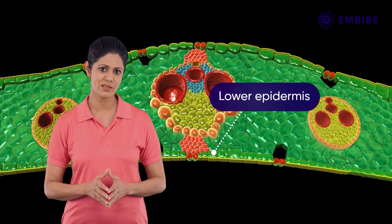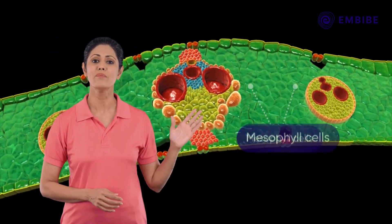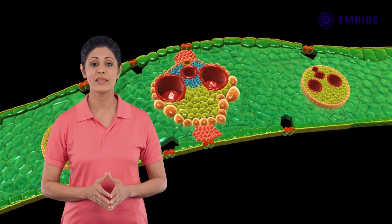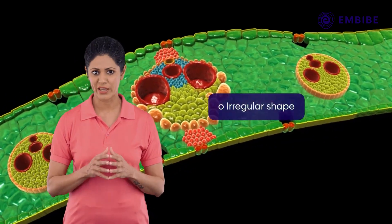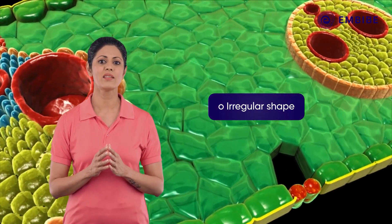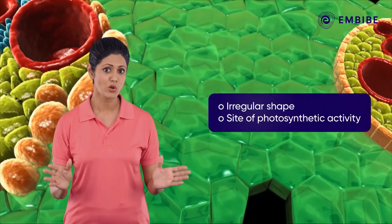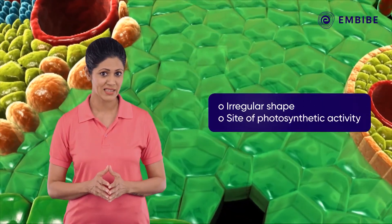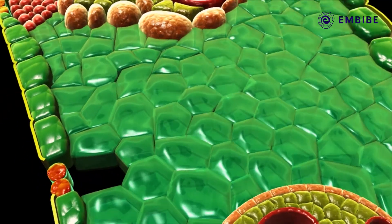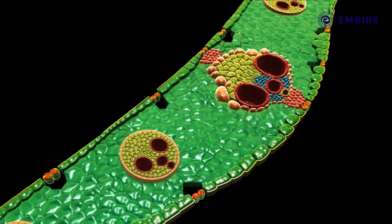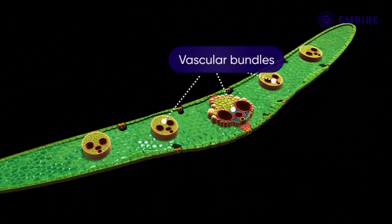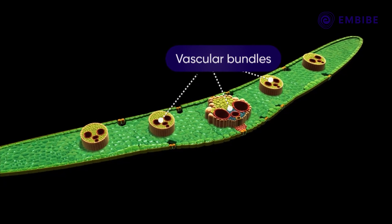The bulk of the cells between the upper and lower epidermis is referred to as the mesophyll cells. These cells are relatively irregular in shape and are the site of maximum photosynthetic activity in the leaf. In the central portion of the leaf section are situated the vascular bundles.